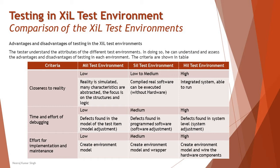When it comes to time and effort of debugging required: in the Mill environment it is low, because it just has a model and defects found in the model of the test system are easy to manage. In Zill it is medium — defects are found in program software and program adjustment is required. In Hill it is high, as defects are found at the system level, requiring system adjustment, which takes comparatively more time than the other test environments.